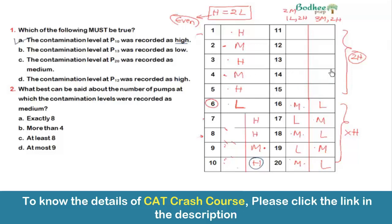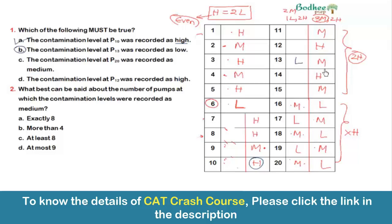Checking Option B: contamination level at P13 was low. In the remaining two sub-cases for P11–P15, P13 could be L or M, so this is not necessarily true. For Option C: contamination level at P20 was medium — in one sub-case it's M, in the other it's L, so again not certain. Option B and C are ruled out.